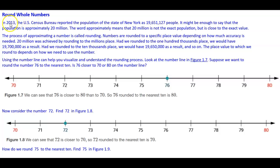Whole numbers. In 2013, the U.S. Census Bureau reported the population of the state of New York is 19,651,127 people. It might be enough to say the population is approximately 20 million. The word approximately means that 20 million is not the exact population, but it is close to the exact value.